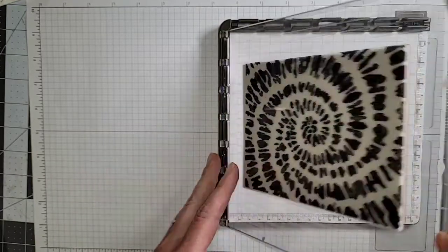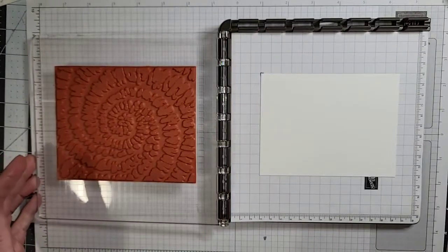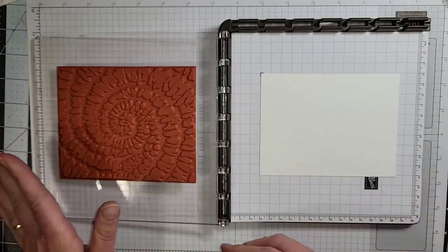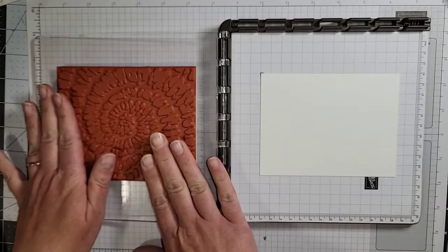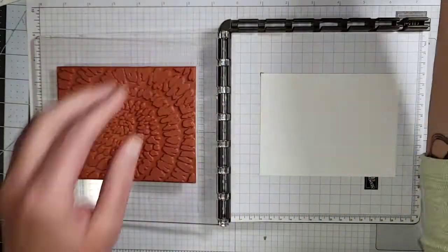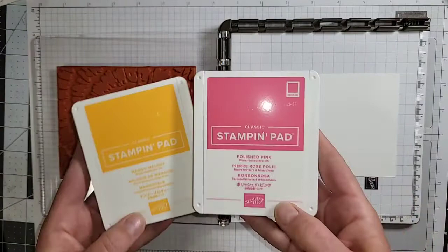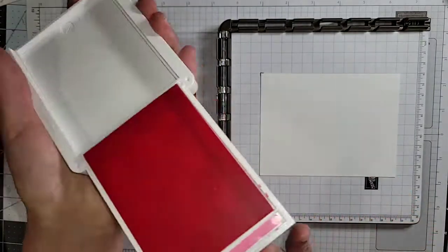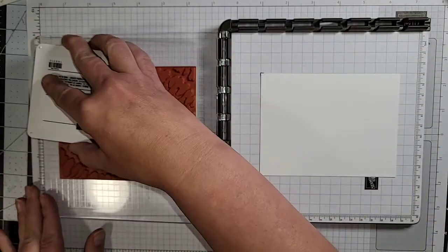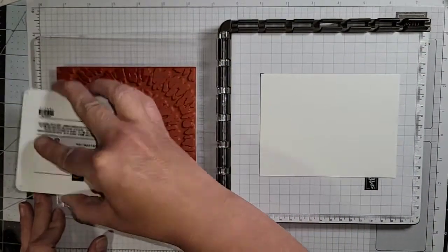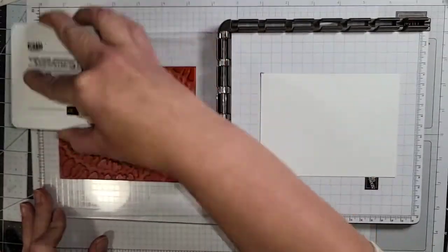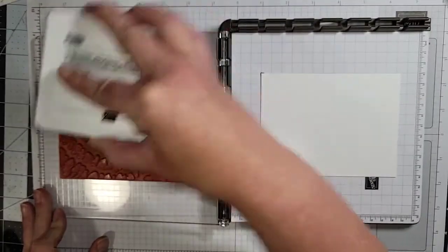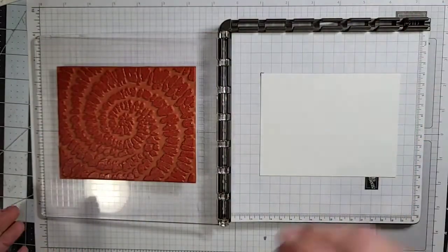Then I'm going to use the plate to grab that and pull it off. Okay so now I have my stamp here, my paper here. I'm going to start with the colors we're using tonight are Polished Pink and Mango Melody. So I'm going to start with the Polished Pink and I'm just going to ink the stamp all up. Okay so you can see I've got the ink on there.